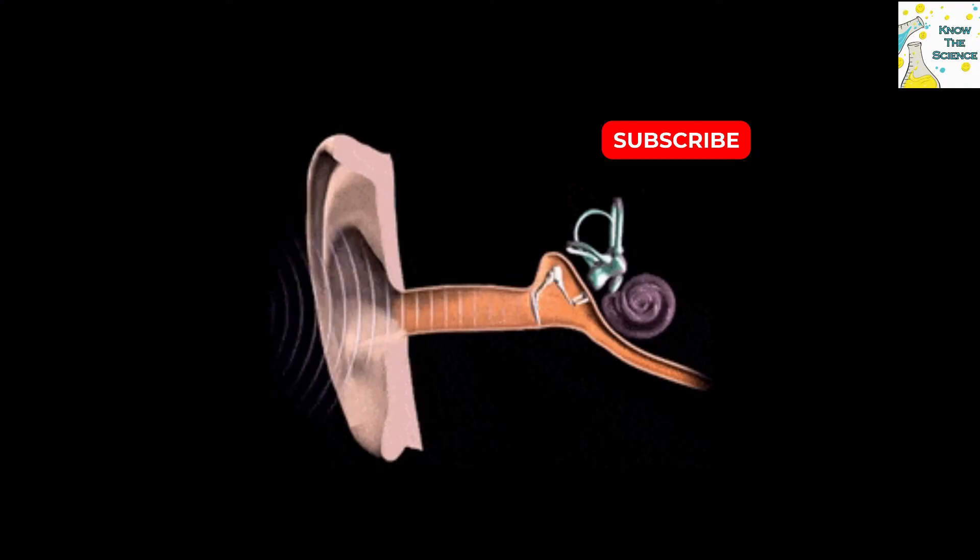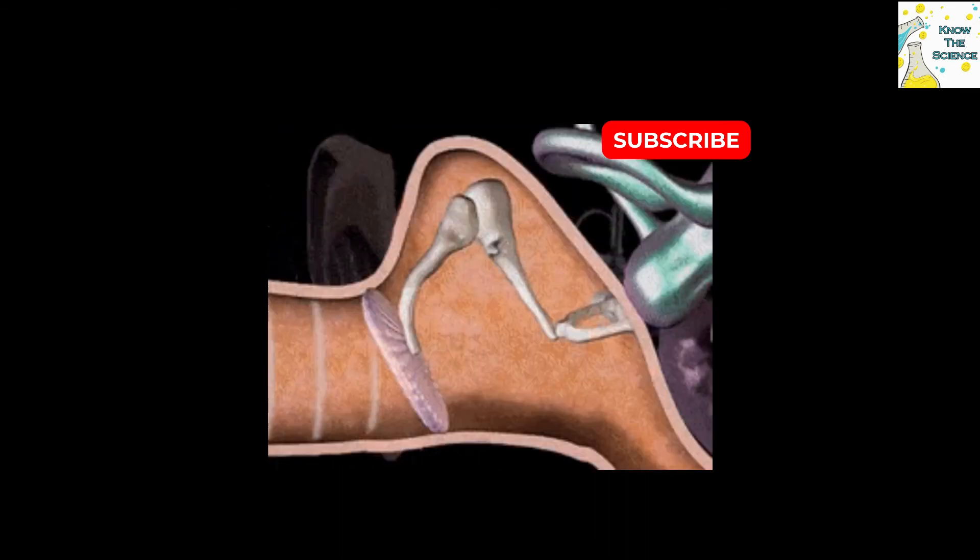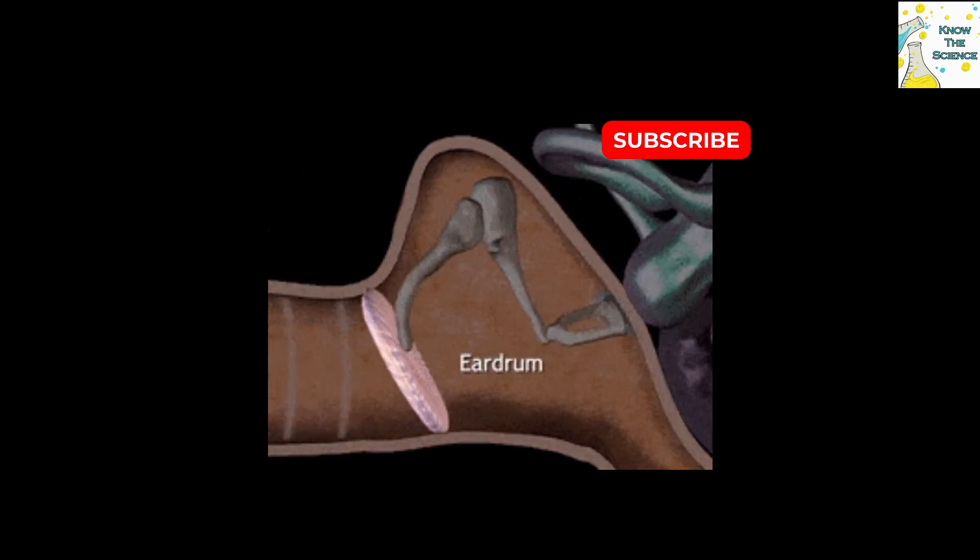The sound produced by a vibrating source travels through air and reaches the outer surface of the ear. The auricle collects all the sound waves and directs it to the auditory canal. On reaching the eardrum, sound waves produce vibration in the eardrum, which in result sets all the ear ossicles into vibration.